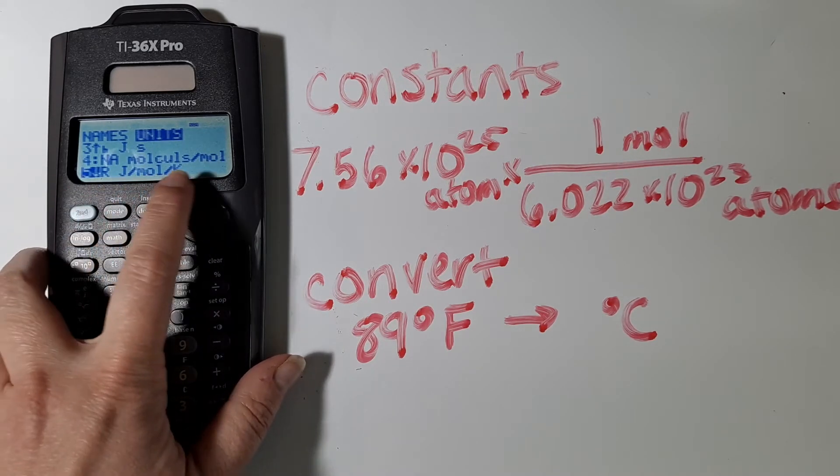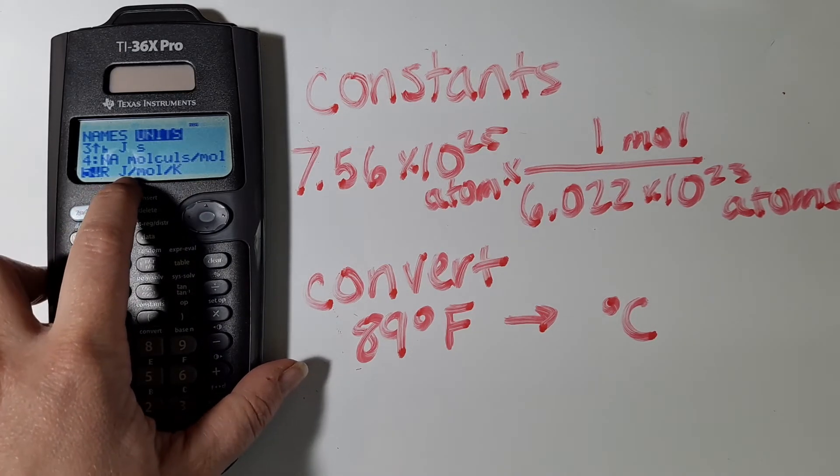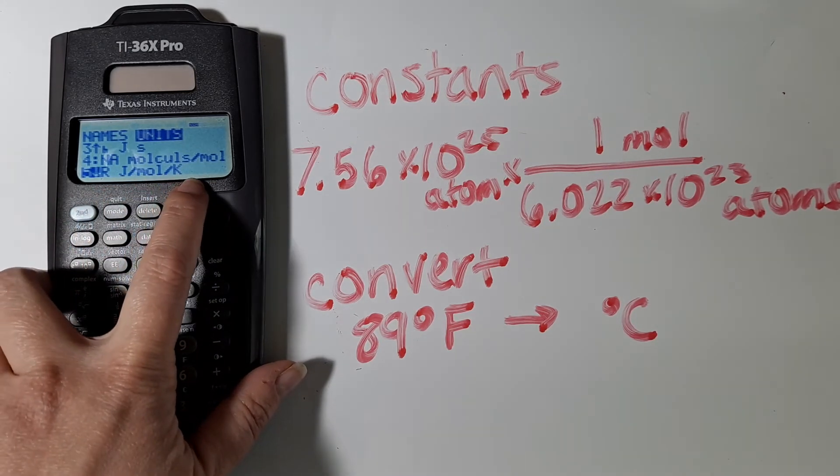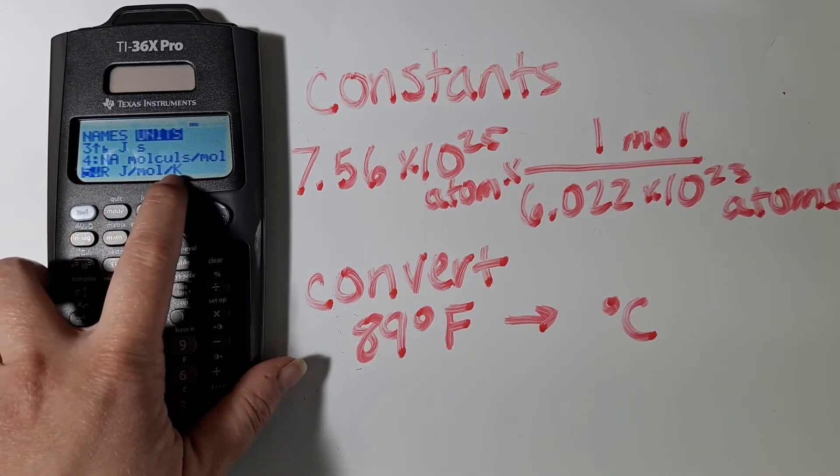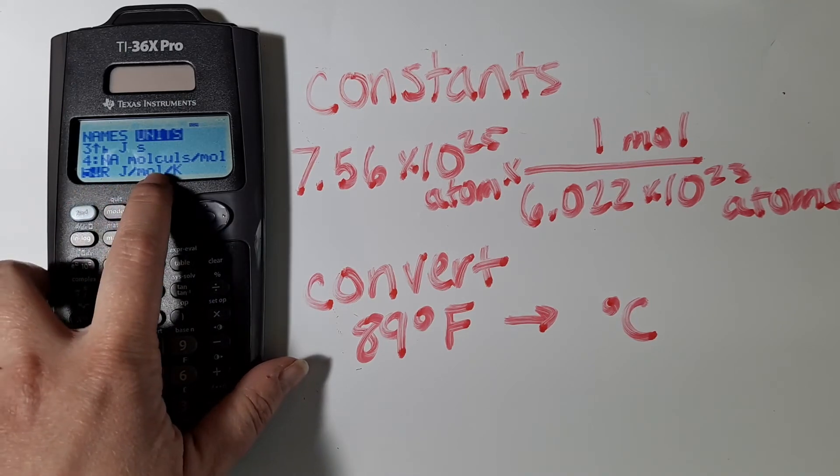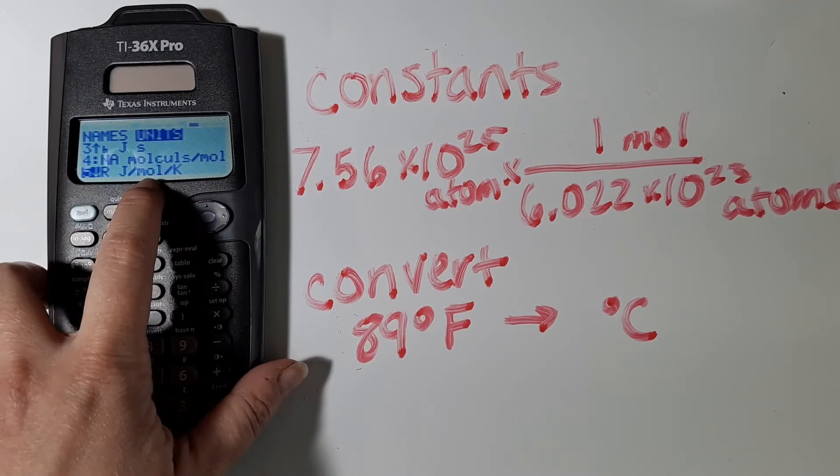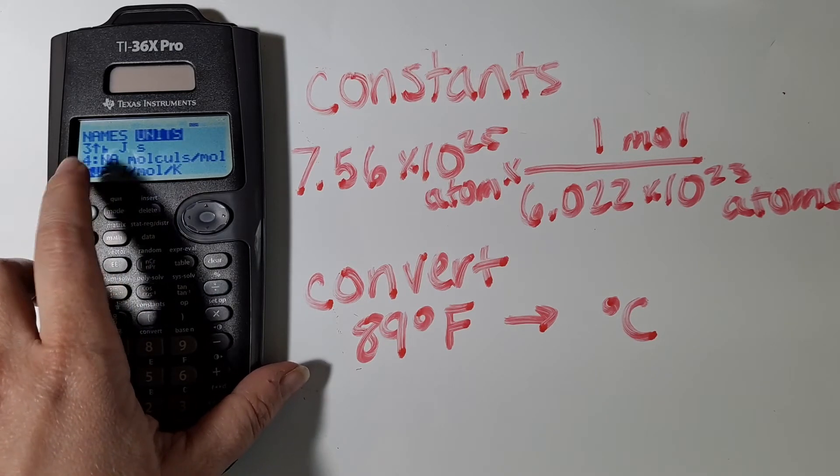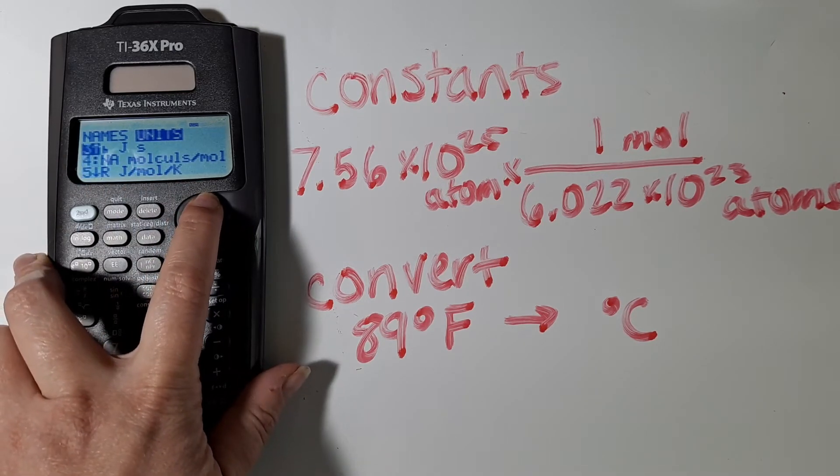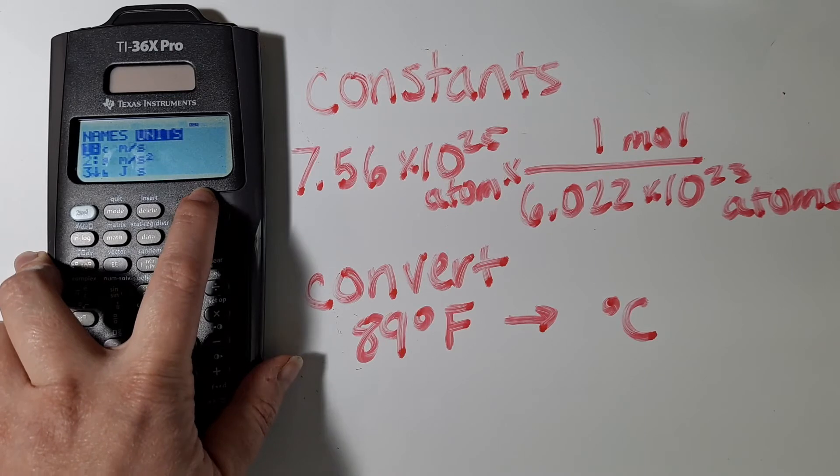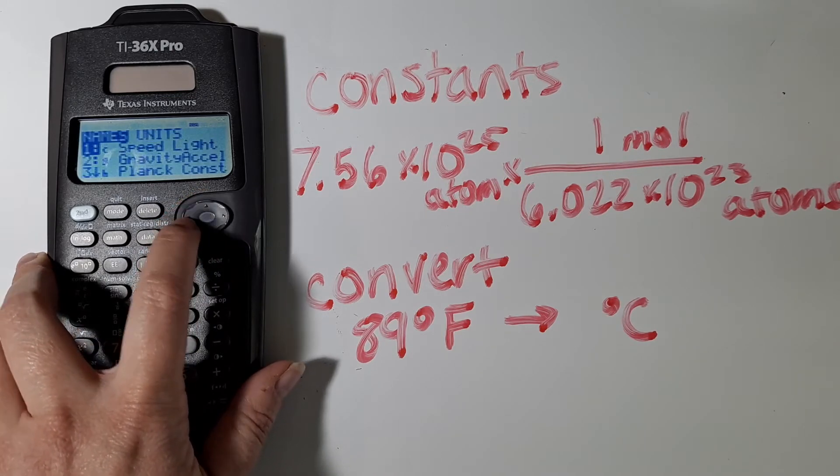Particularly the ideal gas constant, R, is stored in your calculator as joules per mole Kelvin. And oftentimes in chemistry classes, you're going to be using it in liter atmospheres per mole Kelvin. And so you need to know which units that R value is in, because you might be using the wrong one for the units that you have.